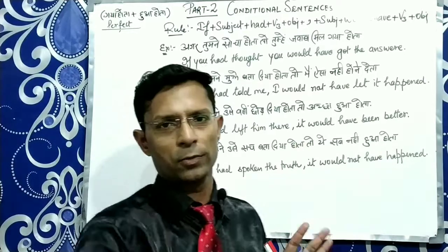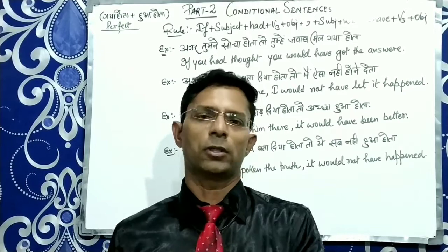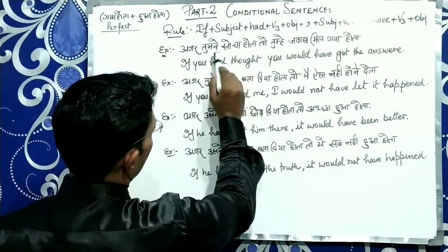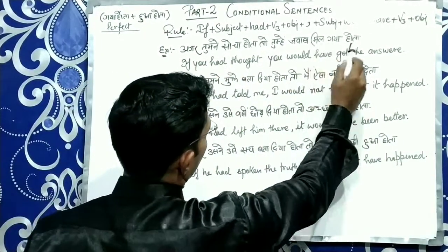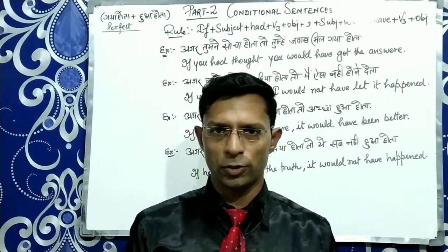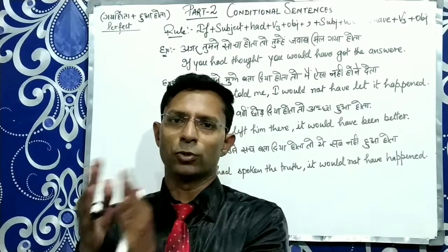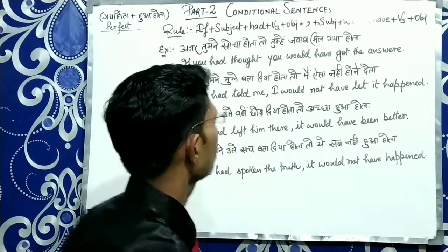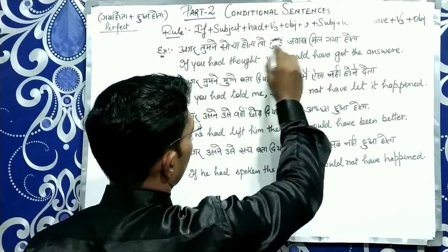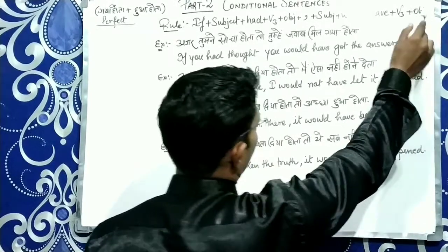Good evening. Basic example: if you have thought, then the answer is — this tense is perfect tense, like present perfect. Rule: if plus subject plus had plus third form of the verb, then object, or second part: subject plus would have plus third form of the verb, then object.